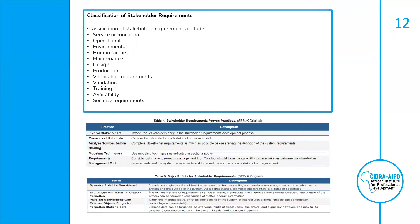Classification of stakeholders' requirements includes service or functional, operational, environmental, human factors, maintenance, design, production, verification requirements, services, validation, training, availability, and security requirements.